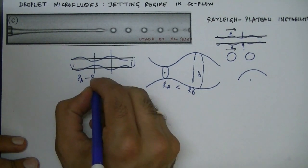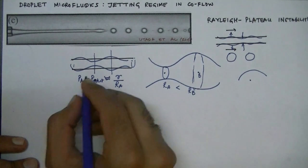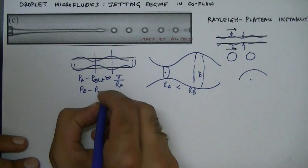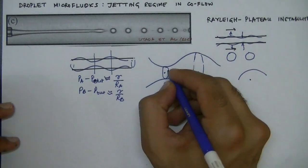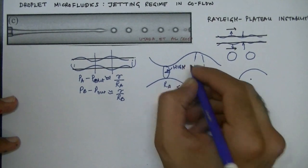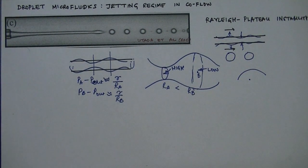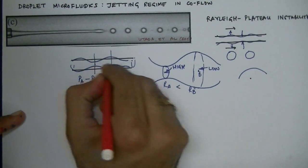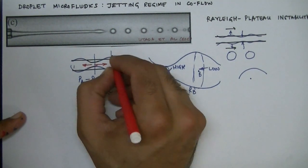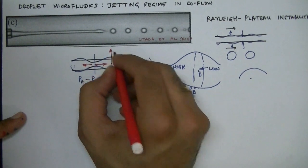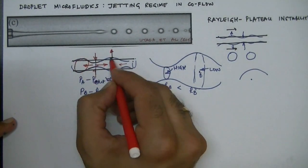Because R_A is smaller than R_B, we have relatively high pressure at A and relatively low pressure at B. This high pressure at A and low pressure at B leads to fluid transfer from A toward B. So the part at A thins down, and the part at B, due to more accumulation of liquid, keeps on increasing. The initial disturbance therefore further amplifies and eventually we form these drops. This instability is called the Rayleigh-Plateau instability.